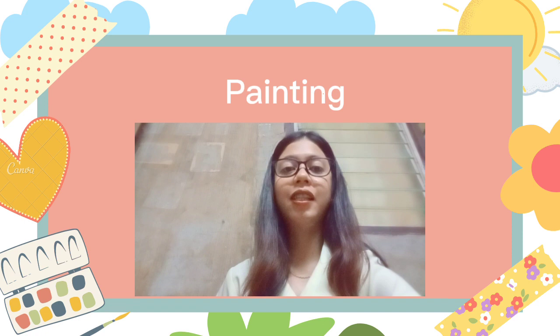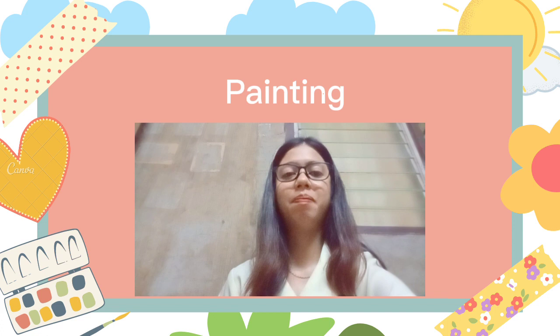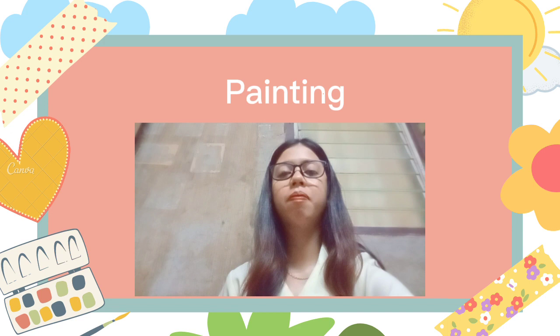A painting is an image formed on a surface such as paper or canvas using pigments. Painting is the act of applying paint to a surface. Paint can be used to make a painting, or it can be utilized more practically as a protective covering or decorative element. Paintings are a type of visual art that uses a two-dimensional surface to convey the expression of ideas and feelings.